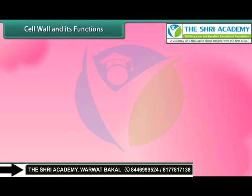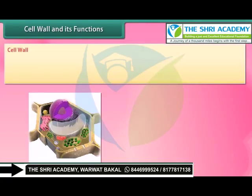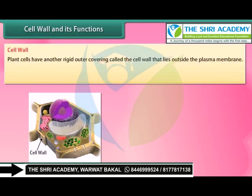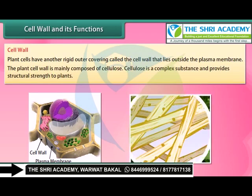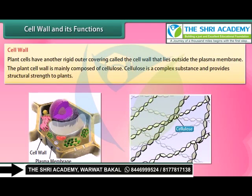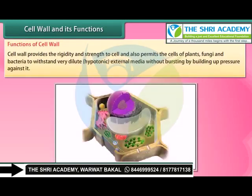Plant cells have another rigid outer covering called the cell wall, which lies outside the plasma membrane. The plant cell wall is mainly composed of cellulose, a complex substance that provides structural strength to plants. The cell wall provides rigidity and strength to the cell, and also permits the cells of plants, fungi, and bacteria to withstand very dilute hypotonic external media without bursting, by building up pressure against it.